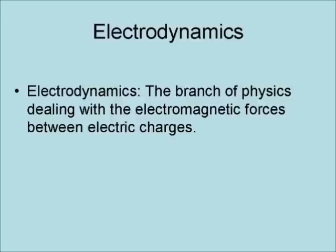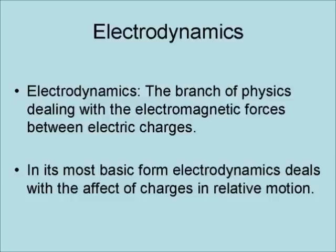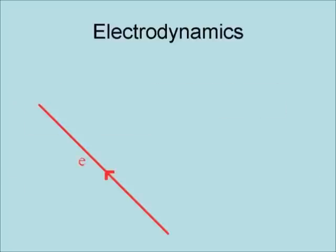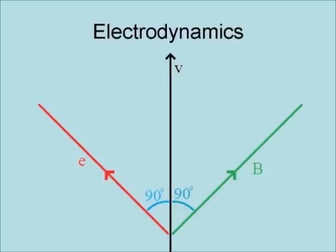Electrodynamics is the branch of physics dealing with the electromagnetic forces between electric charges. In its most basic form, electrodynamics deals with the effect of charges in relative motion. When an electric field is not in relative motion, it is just the electric field. When this electric field is placed in relative motion, the result is a magnetic field at right angles to both the electric field and the relative motion. Furthermore, when a magnetic field is in relative motion, it will in turn produce an electric field, also at 90 degrees to both the magnetic field and the direction of relative motion, as shown in the illustration.